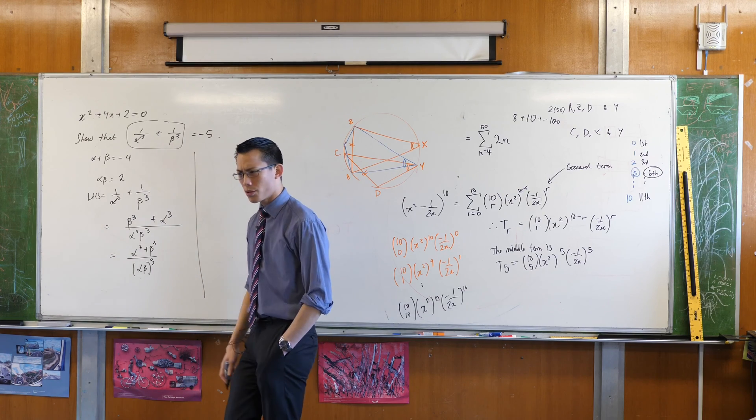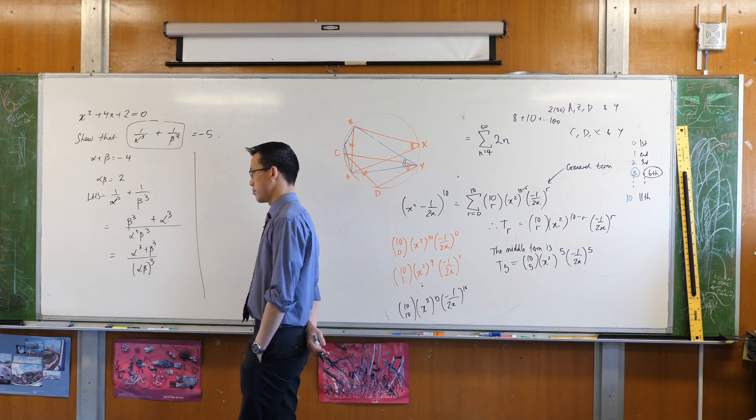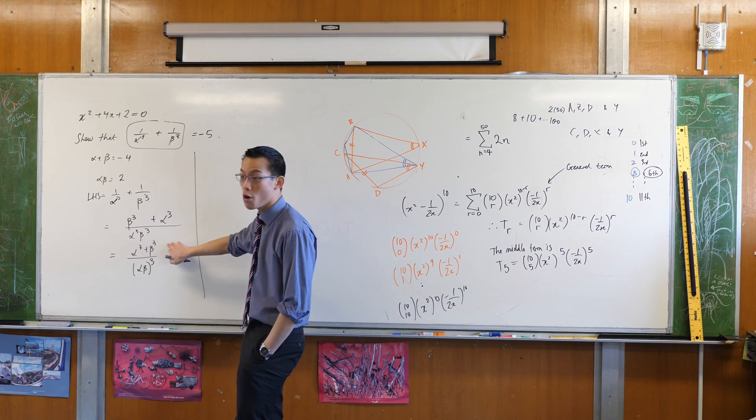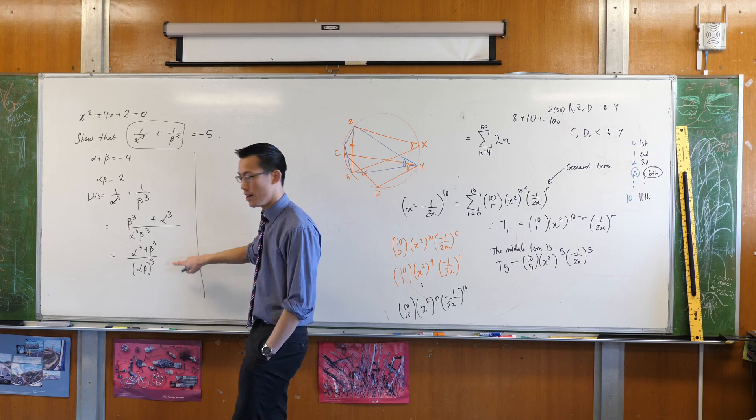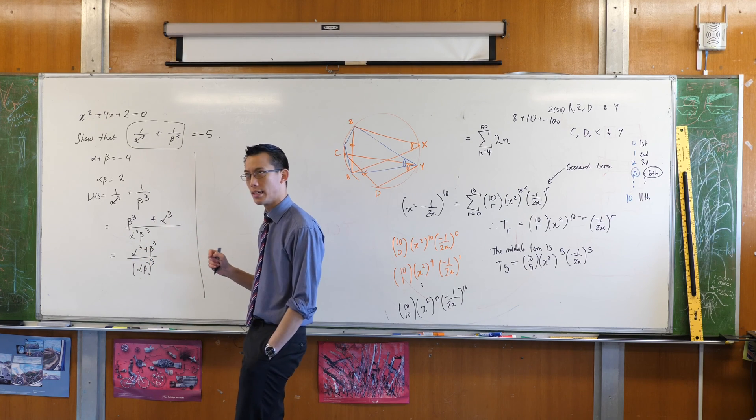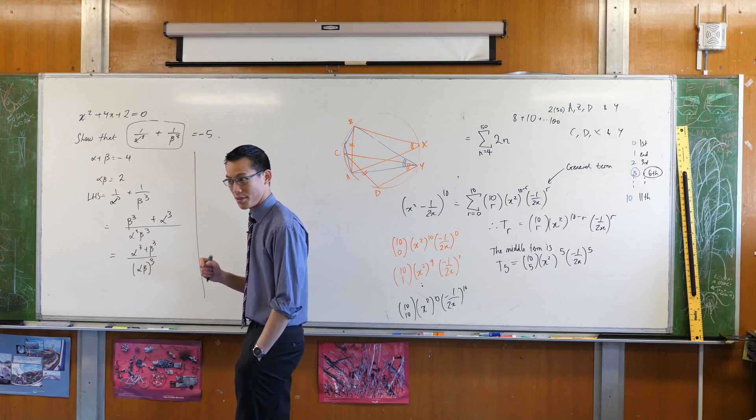Okay but then you come to the top and you're like, what am I going to do with this? Now as a two unit student, you know an identity that can help you with this numerator. It's the sum of two things that have been cubed. So what's the sum of cubed's identity? Do you know it?